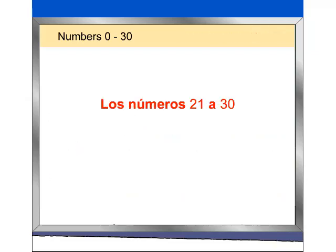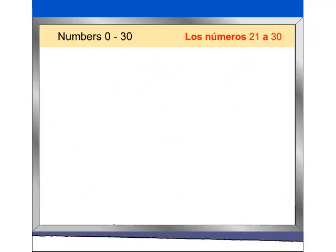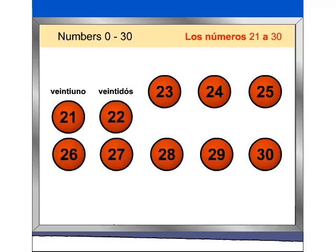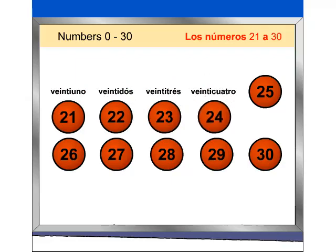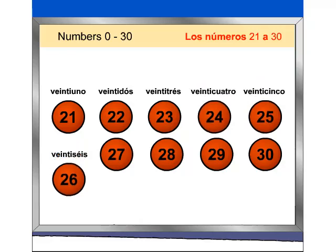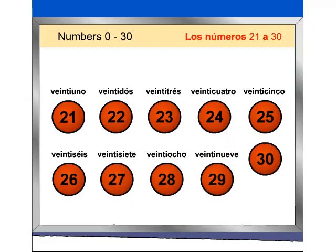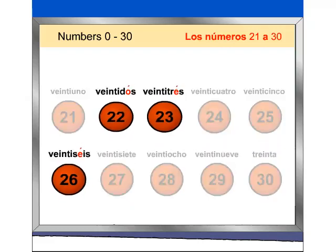And now numbers 21 through 30. Once again, repeat after me. Veintiuno, veintidós, veintitrés, veinticuatro, veinticinco, veintiseis, veintisiete, veintiocho, veintinueve, treinta. Note the accents on veintidós, veintitrés, and veintiséis.